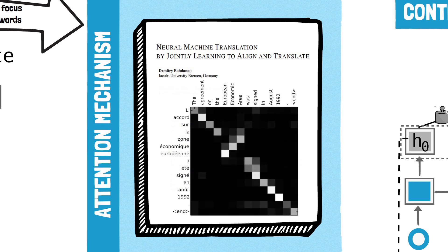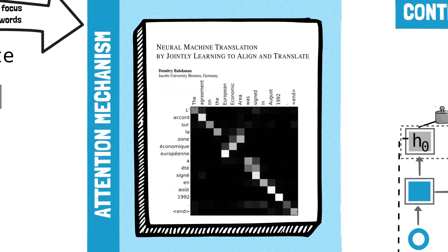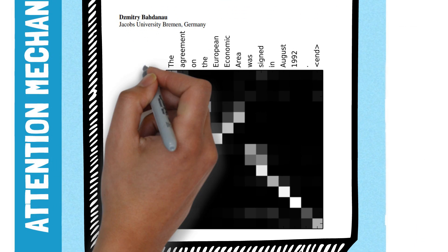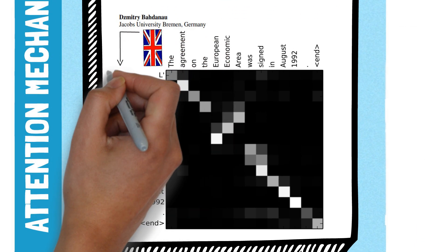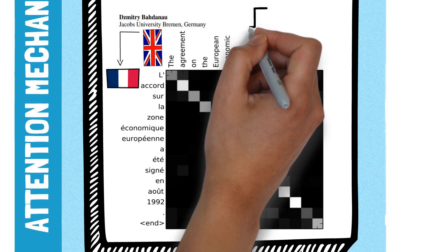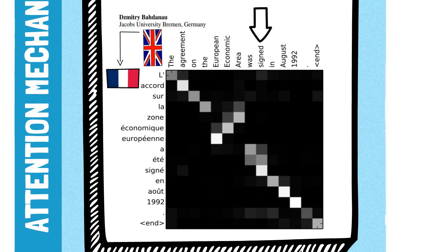This is an example matrix showing the attention weights generated by Bahdanau's model while translating a sentence from English to French. Each column represents the weights for each input word. You can clearly see the attention patterns the model learned to generate.